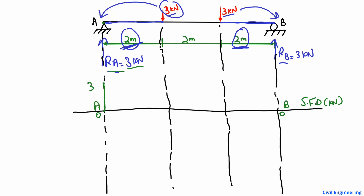There is no load between A and the first point load, so the shear force remains a straight horizontal line at +3 kN. Then a 3 kN downward load acts, bringing the shear force down by 3 kN. Since +3 and −3 cancel, the shear force becomes 0 at that point.